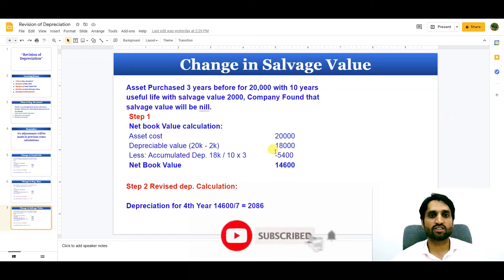Now let's move ahead and see if the change happens in salvage value or residual value. Now asset purchased three years before for 20,000 with 10 years useful life with salvage value of 2,000. Company found that salvage value will be nil.